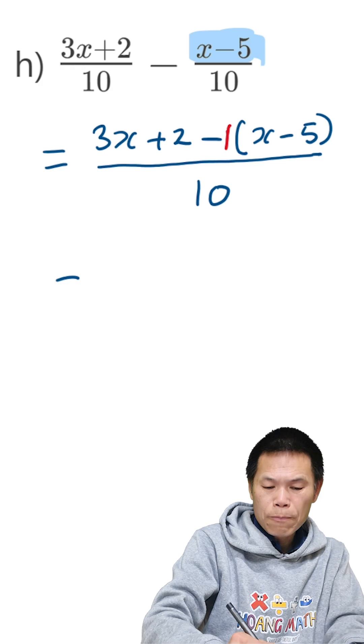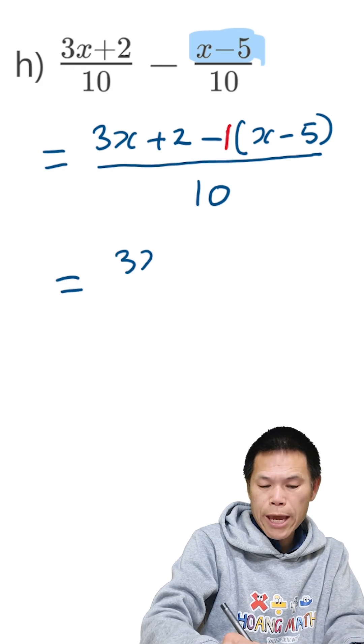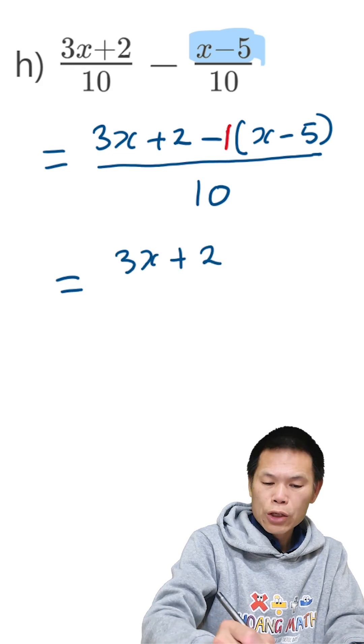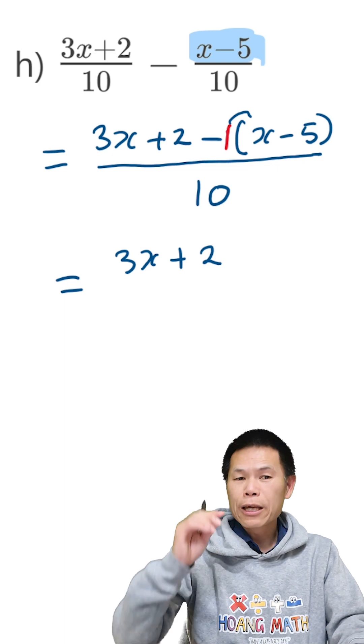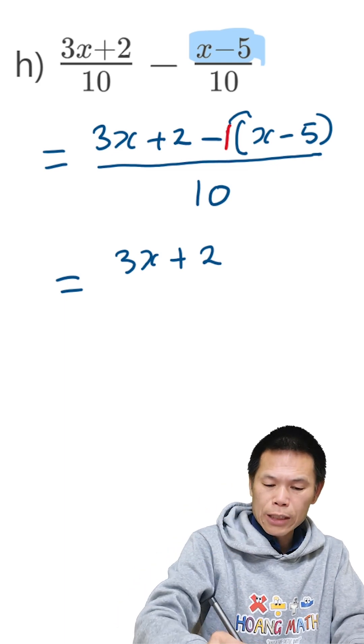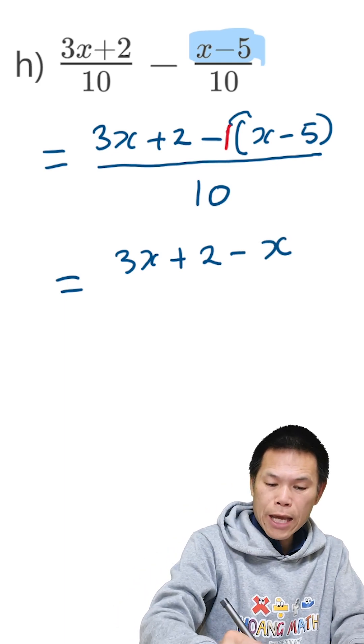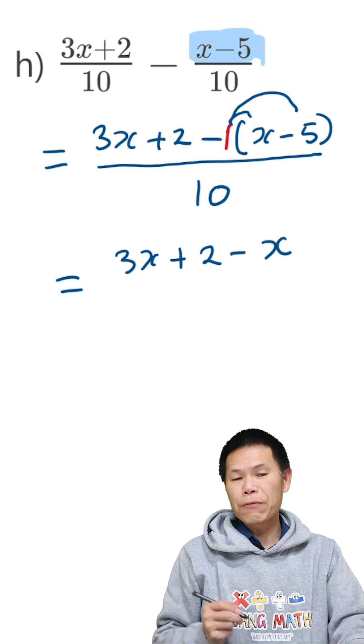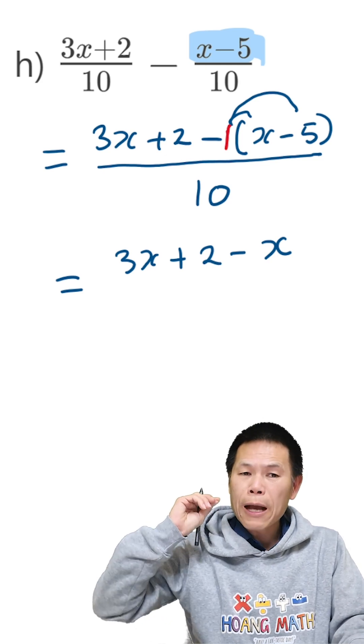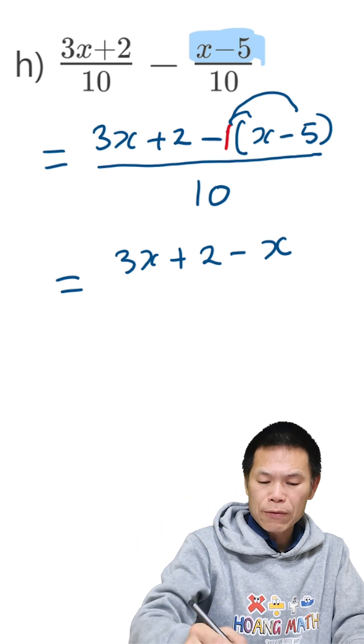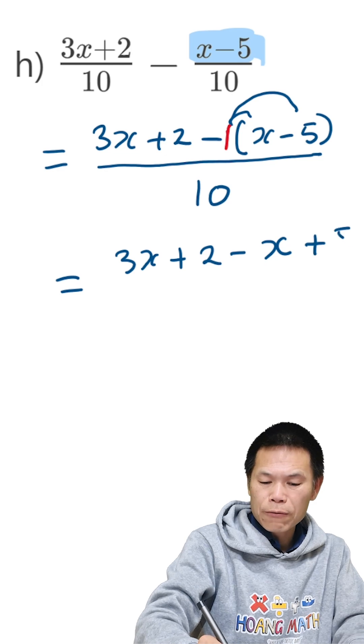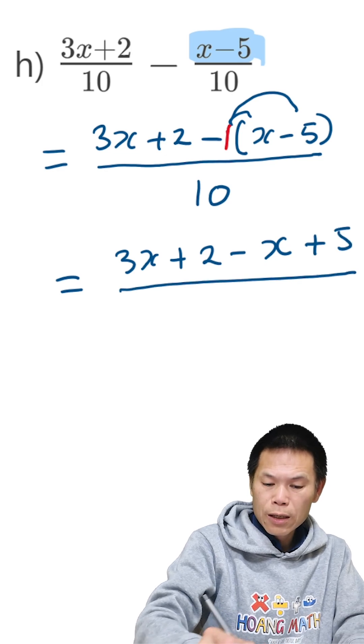So that is equal to, let me copy, 3x plus 2. So negative 1 times x give me negative x, so that is minus x. Negative 1 times negative 5, or that 2 negatives together become positive, so 1 times 5 is 5, so we plus 5, over 10.